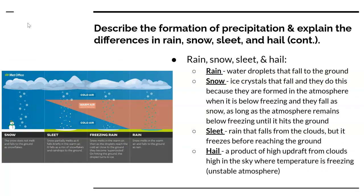The picture on the left shows the differences between snow, sleet, freezing rain, and rain and how it all falls down. Closer to the clouds you have colder air, then warmer air below, and close to the ground it can become cold air again depending on the weather. Rain is simply water droplets that fall to the ground in a warm atmosphere. Snow is ice crystals that form in the atmosphere when temperatures are below freezing, and as long as the atmosphere remains below freezing, they hit the ground as snow.